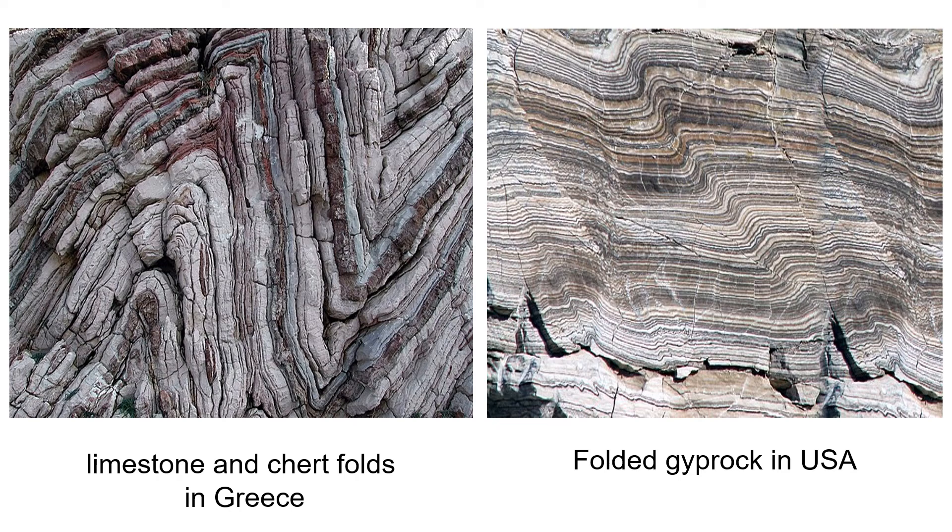Folds of alternate layers of limestone and chert occur in Greece. The limestone and chert were originally deposited as flat layers on the floor of a deep sea basin. These folds were created by alpine deformation.